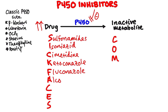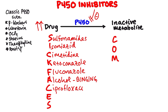A for alcohol — but here we're talking about binging. So we talked about chronic alcohol use being something that induces the P450 system. When we're talking about binging alcohol, we're inhibiting the P450 system. So that's an important distinction. C for ciprofloxacin, a common antibiotic. E for erythromycin, another antibiotic.